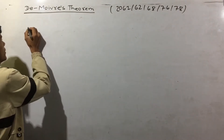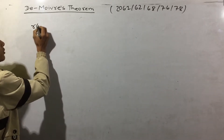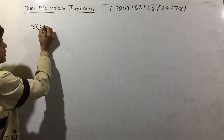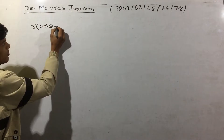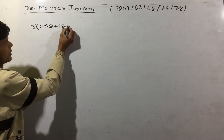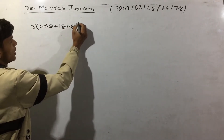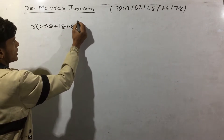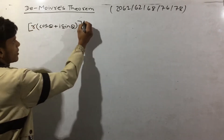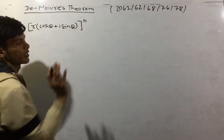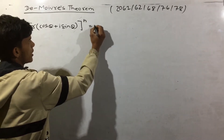The first step: R is such that the second method is cos theta plus i sin theta raised to the power n, and all power is on the power.